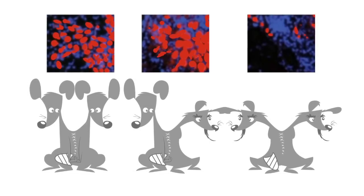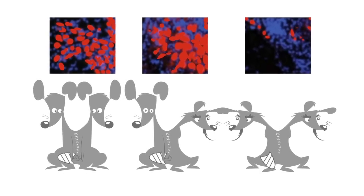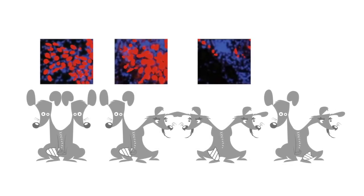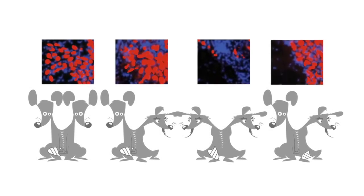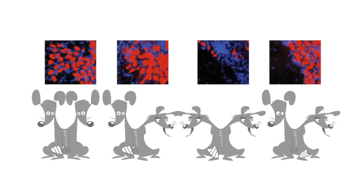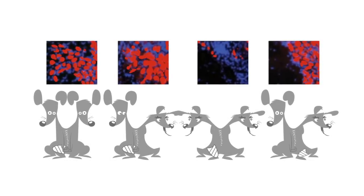But the key result, the one you can guess is coming, shown here at the end, is to pair a young mouse with an old mouse and now injure the muscle in the old mouse. And sure enough, look at all those red cells. The old mouse has now been rejuvenated, as it were. It's repairing its muscle at the young rate.